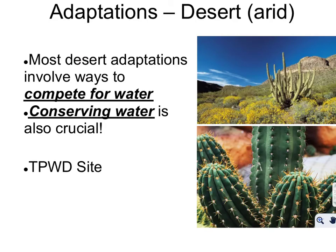Next we're going to look at a few quick adaptations — how plants survive in difficult conditions. If you think about a desert, obviously cacti have it tough because they have a lot of sunlight but not enough water, so conserving water is very crucial. We're going to talk about how they actually hold in the water. If you type in TPWD on Google, you'll find a website with a lot of information on different plant adaptations.